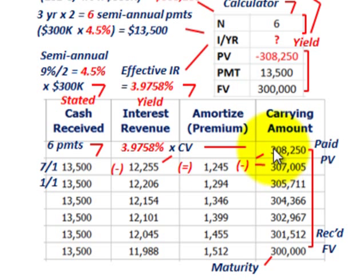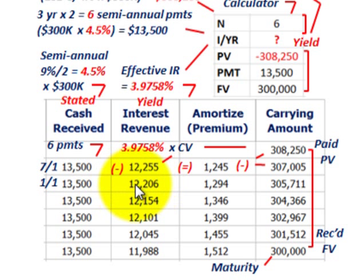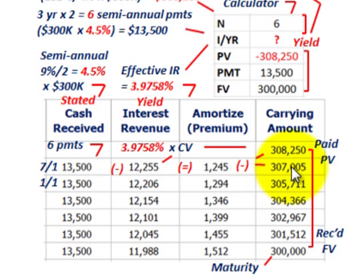Since it's a premium, subtract the amortized amount of $1,245 from the beginning balance of $308,250 to get the new carrying value. Then take that new balance times the effective interest rate to get the next period's interest revenue. Compare to cash receipts to get the next amortized premium amount, subtract, and proceed until you reach the maturity value.